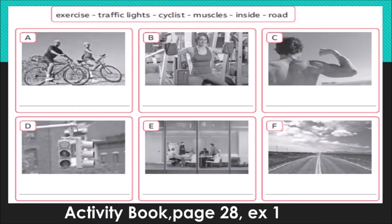This is in your activity book, page 28, exercise 1. Se hace en el activity book en la página 28, ejercicio 1. Tenemos imágenes. We have six pictures and we have to write the correct names in English. We have a list of words to use, and they are the following: exercise, ejercicio; traffic lights, semáforo; cyclist, ciclista; muscles, músculos; inside, dentro; road, carretera.